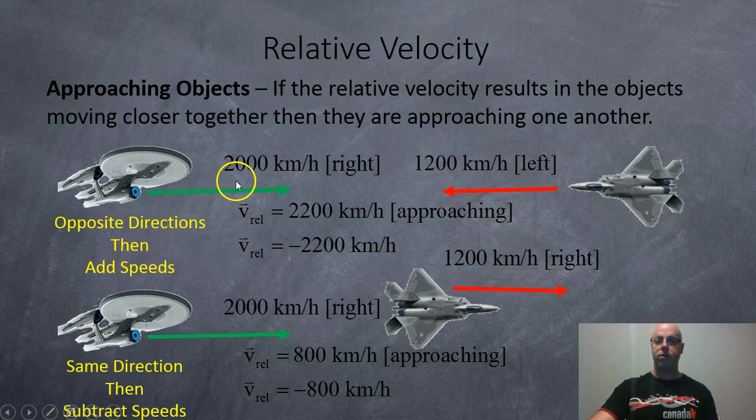So here are 2,000 km per hour plus 1,200, we get a total approaching velocity of 2,200. Here, moving at 2,000 km per hour behind another object moving at 1,200, now we're approaching at 800 km per hour. If you have opposite directions, then add speeds. If you're in the same direction, you're going to subtract the speeds.